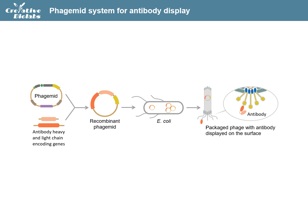In another system, a helper phage is co-transformed into E. coli with the phagemid, since the phagemid does not have all the genes necessary to encode a full phage in E. coli. This system, which requires the helper phage to provide the necessary components, takes the advantage of producing a higher ratio of target antibodies.